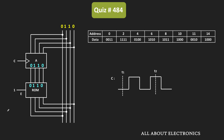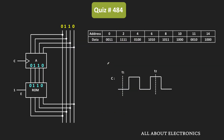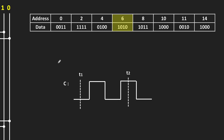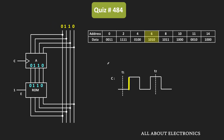Whatever data is stored at this specific address will be available at the output. As you know, internally the ROM consists of a decoder and memory cells. Depending on the specific address, the corresponding decoder output gets enabled. As per the table, 0110 in decimal corresponds to 6. At address 6, the data stored in the ROM is 1010. That means after the first rising clock edge, the data available from the ROM is 1010, and the same will be available on the data bus.